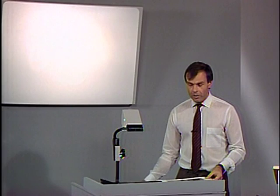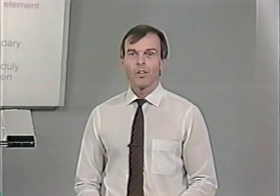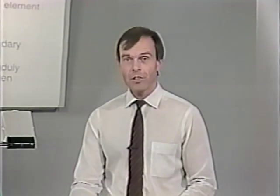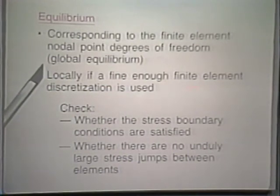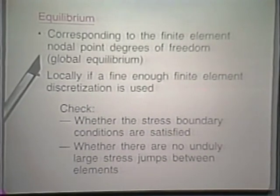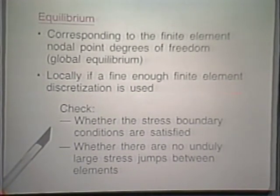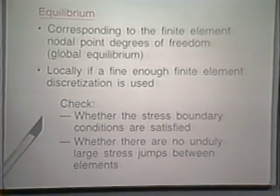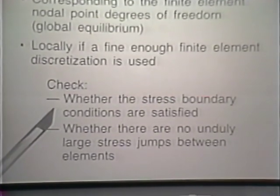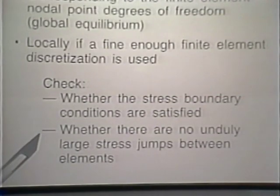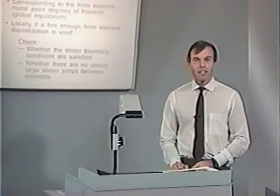I'd like now to demonstrate these considerations by showing results of two example analyses on a second reel of this lecture. We discussed that global equilibrium — at the nodal points of the finite element mesh — is always satisfied for any mesh selected. However, locally, equilibrium is only satisfied if the mesh is fine enough, indicated by whether stress boundary conditions are well satisfied and whether there are no stress jumps between elements.